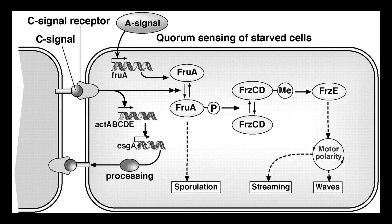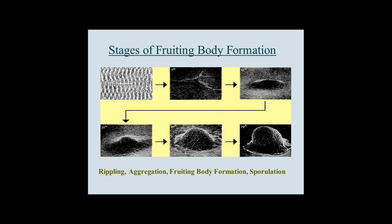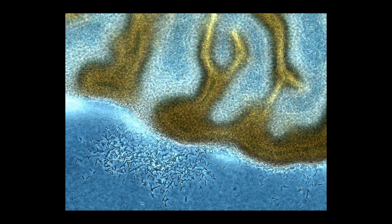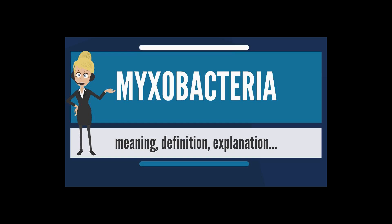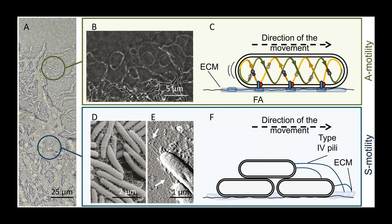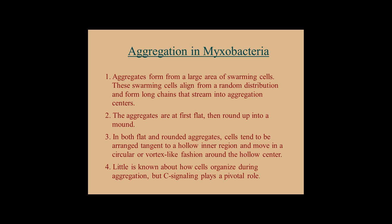Myxobacteria can move by gliding. They typically travel in swarms, also known as wolf packs, containing many cells kept together by intercellular molecular signals. Individuals benefit from aggregation as it allows accumulation of the extracellular enzymes that are used to digest food, which in turn increases feeding efficiency. Myxobacteria produce a number of biomedically and industrially useful chemicals, such as antibiotics, and export those chemicals outside the cell.